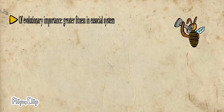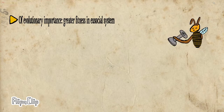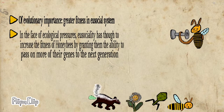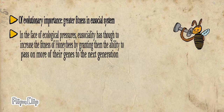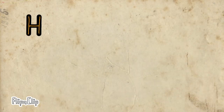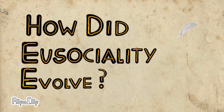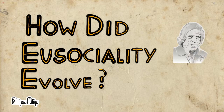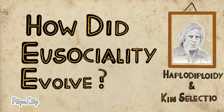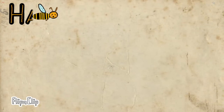Of evolutionary importance is the greater fitness conferred to individuals in this eusocial communal system when ecological pressures are present. Eusociality can increase fitness for honeybees because more of their genetic information is able to be passed on. The leading hypothesis was described by William D. Hamilton through his theory that the genetic phenomenon of haplodiploidy and the evolutionary strategy of kin selection drove honeybees to a eusocial system.